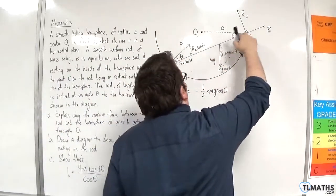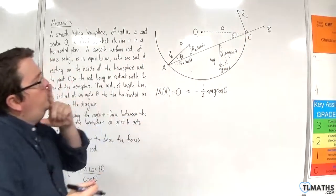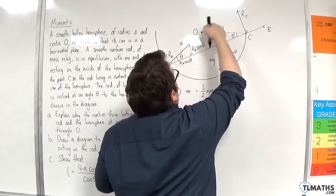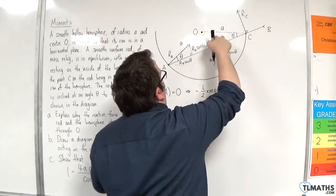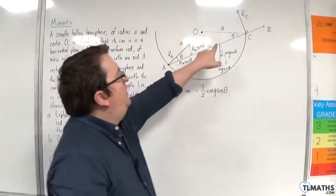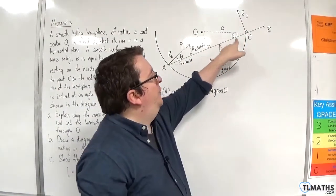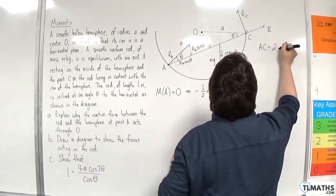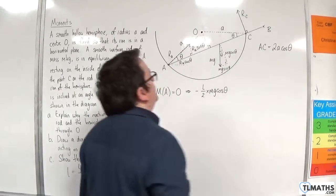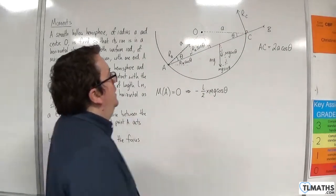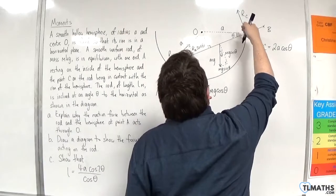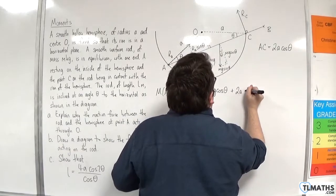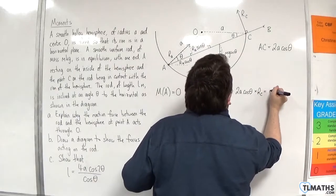And this distance here, what is the distance from A to C? Well, I know that the radius is of length A. And if I think about splitting that into two of the same right-angled triangles, then this distance here has to be A cosine theta. So that means that distance AC has to be 2A cosine theta. So I am 2A cosine theta away from the RC force, which is going around in an anti-clockwise motion. So plus 2A cosine theta times by RC. And that's going to be equal to 0.